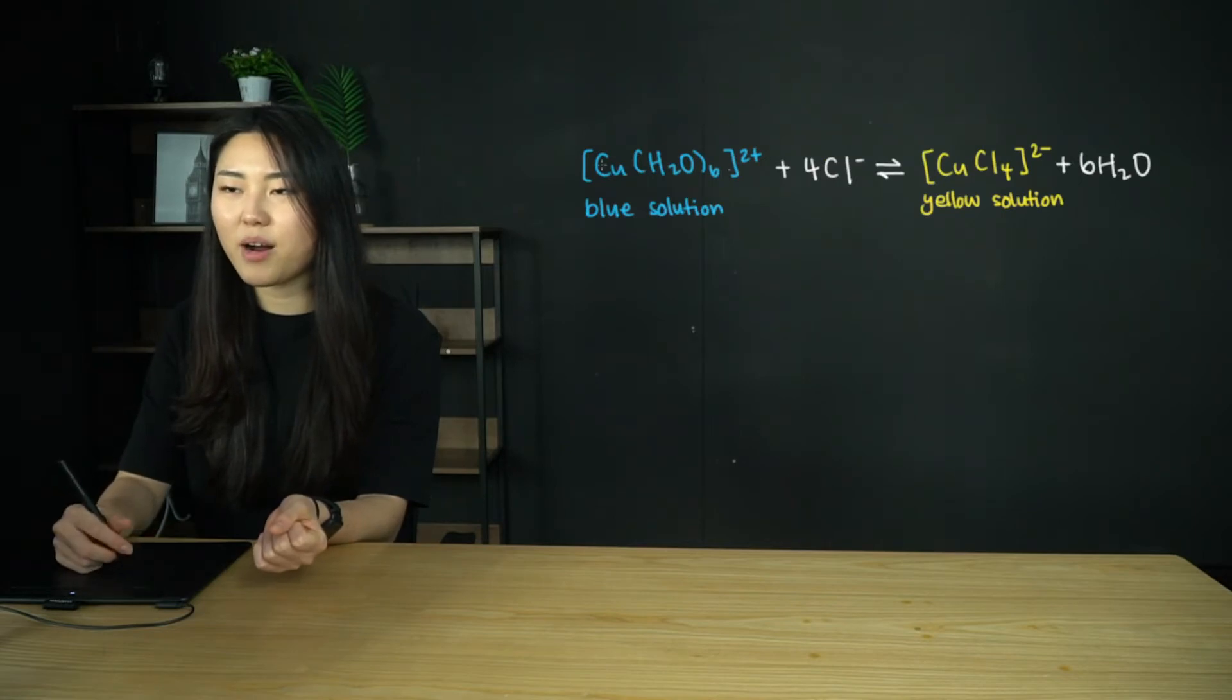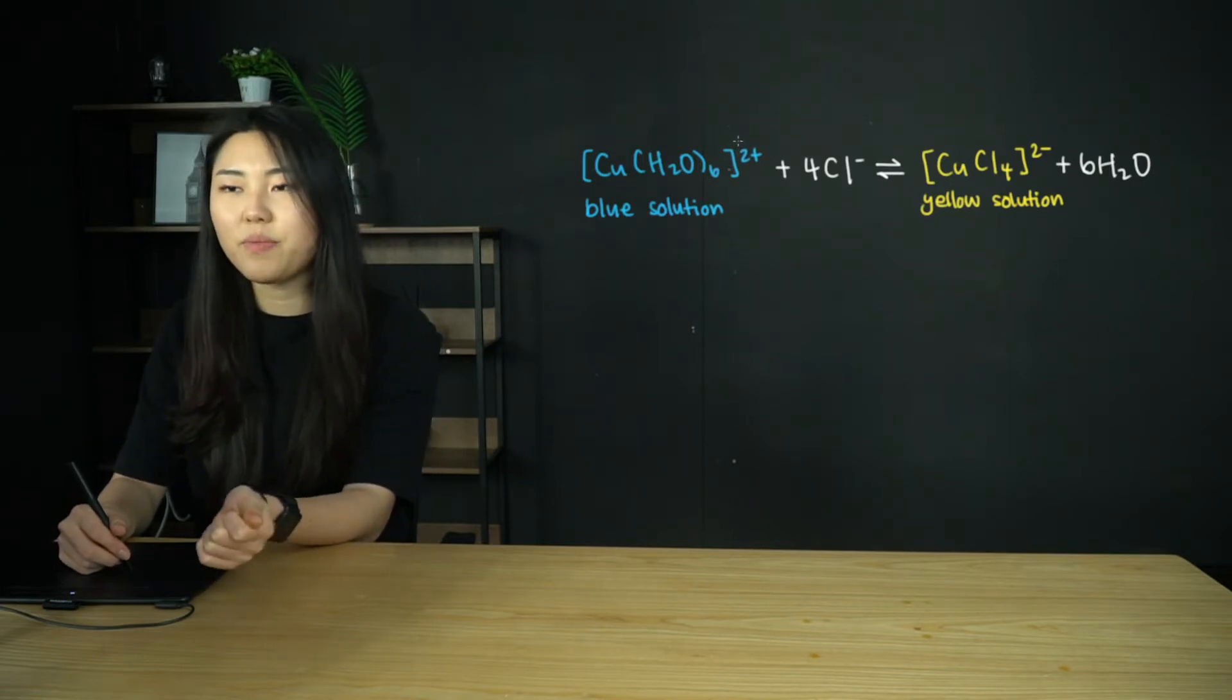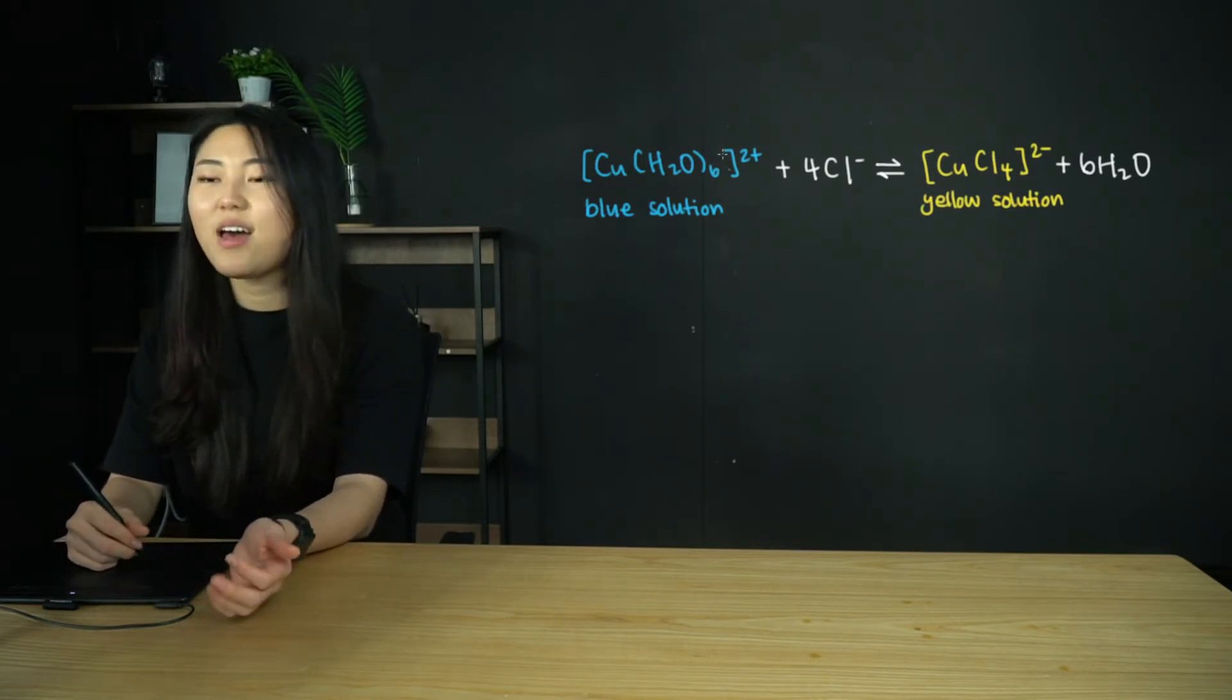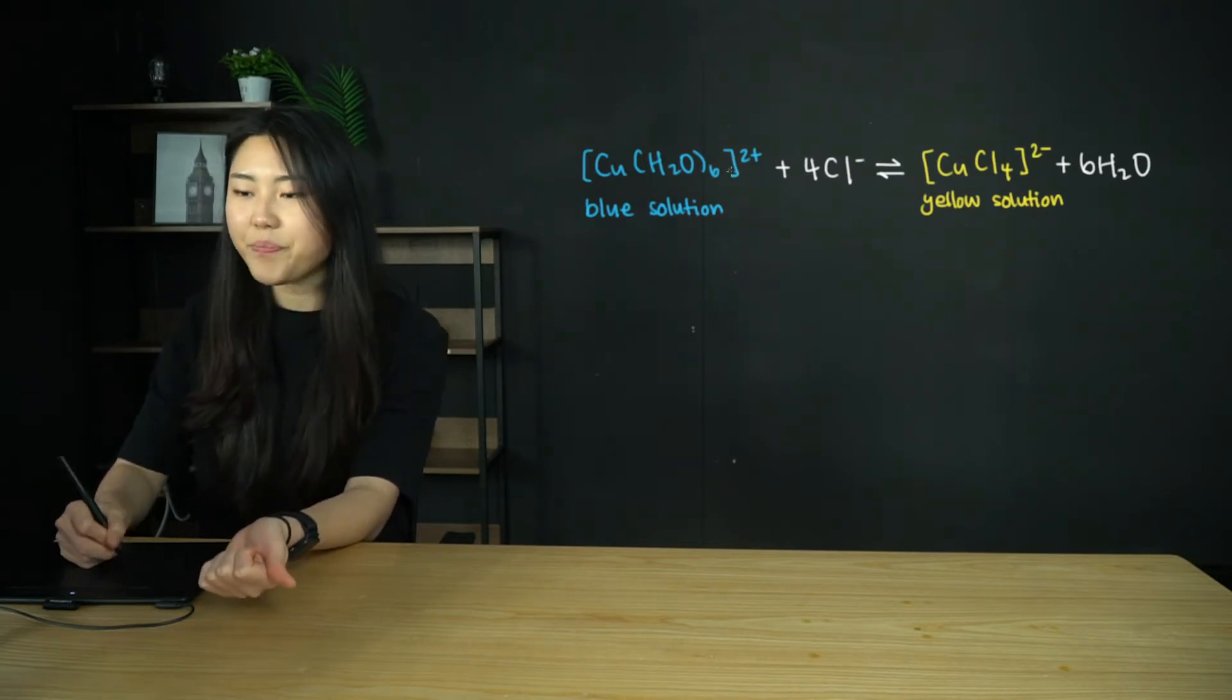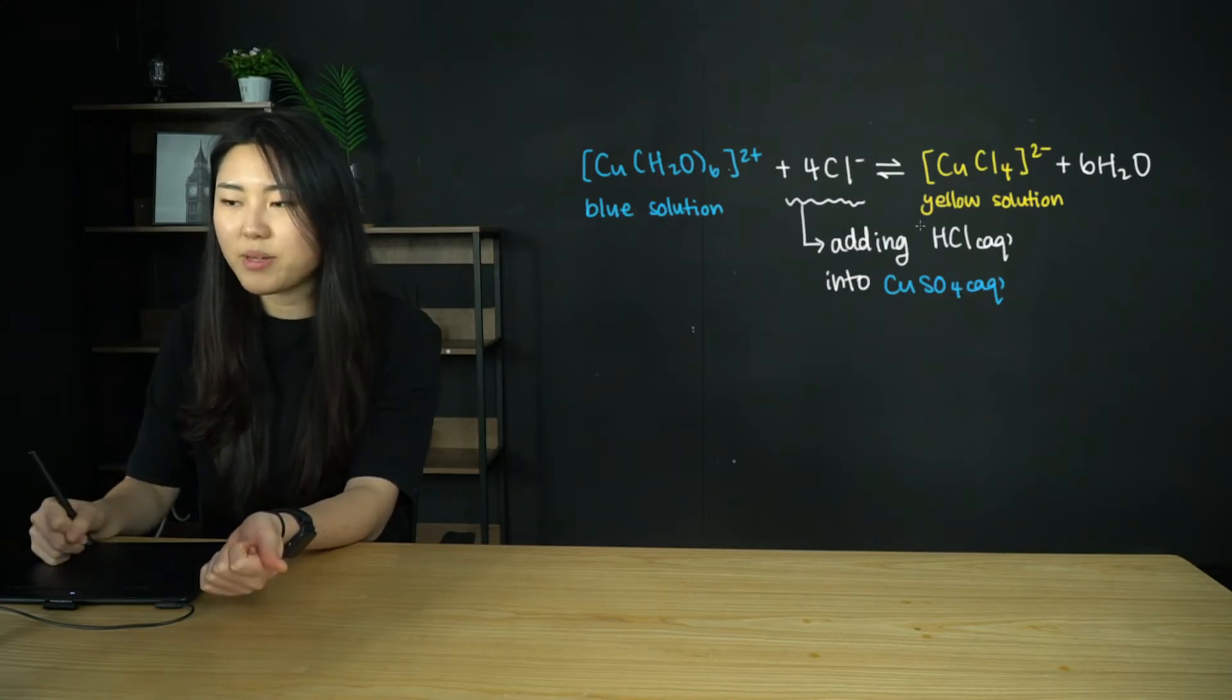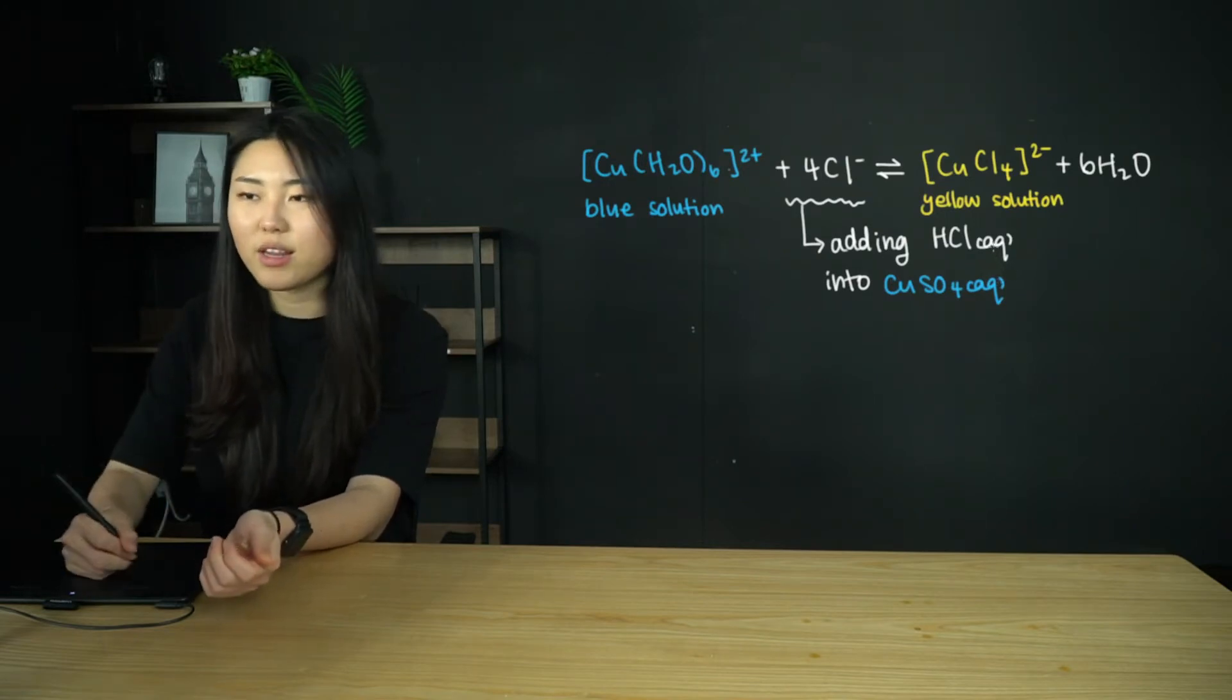If we have an aqueous solution of copper 2+ ions, it's going to form a complex ion surrounded by water ligands, because it's aqueous. That solution is going to look blue because of the complex ions in there. We're adding hydrochloric acid into copper sulfate aqueous solution, which contains the Cu2+ ions surrounded by water ligands.